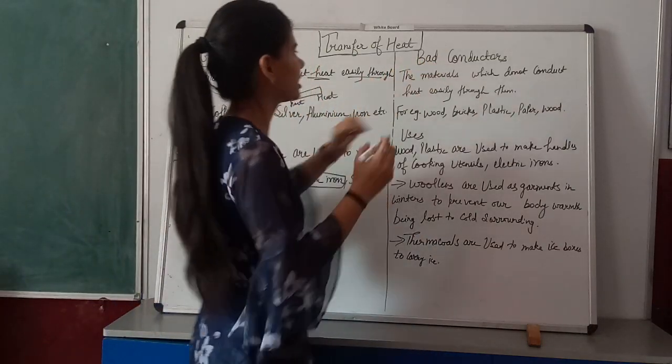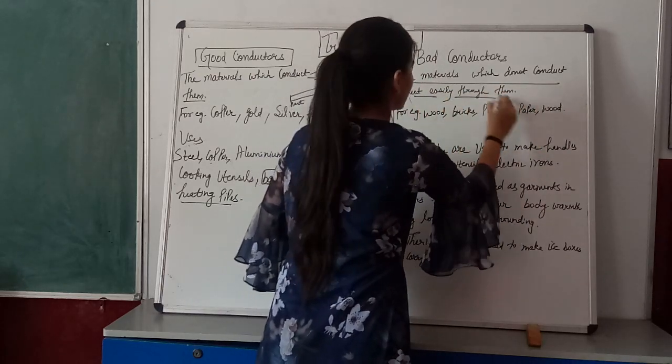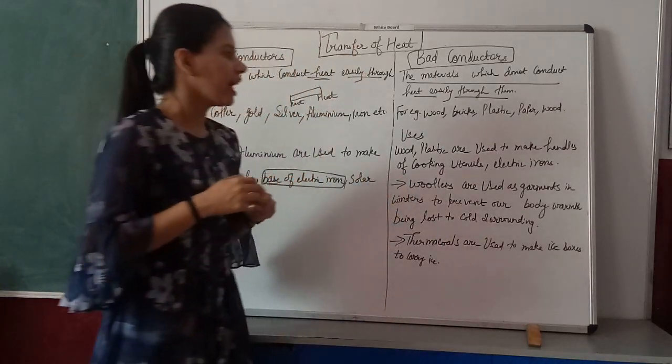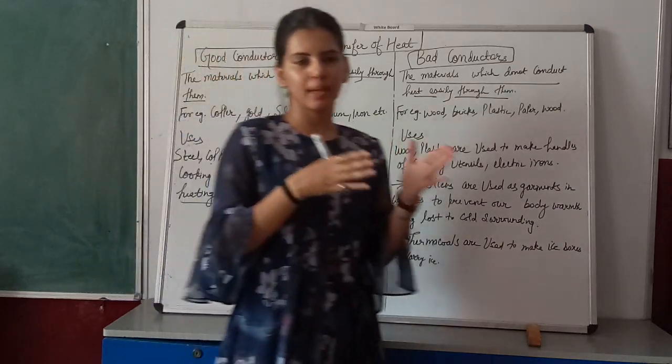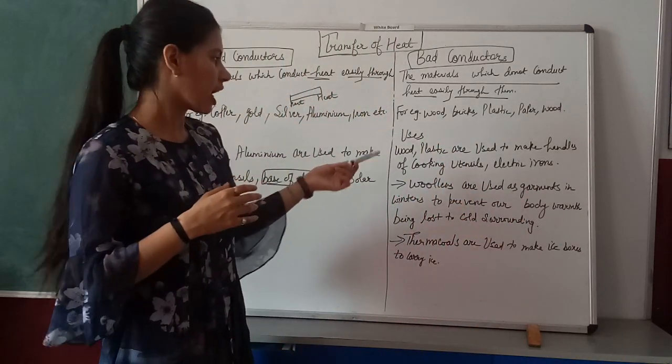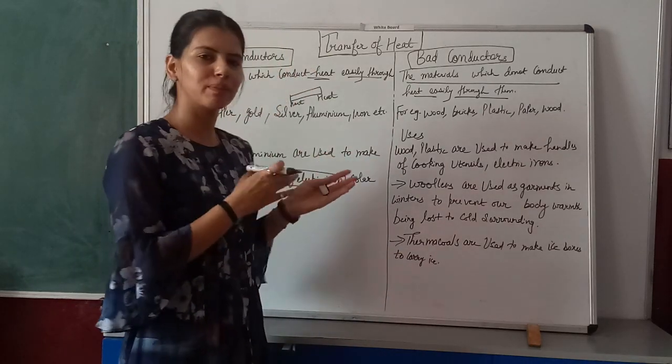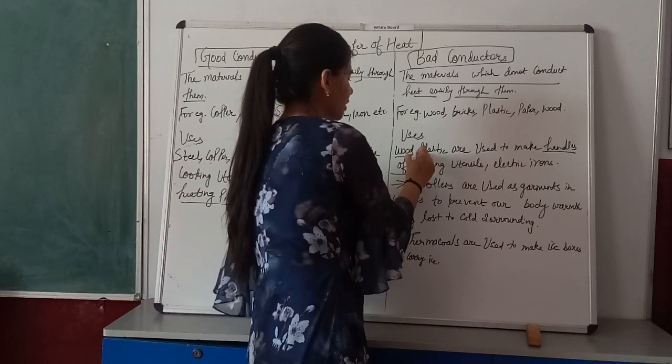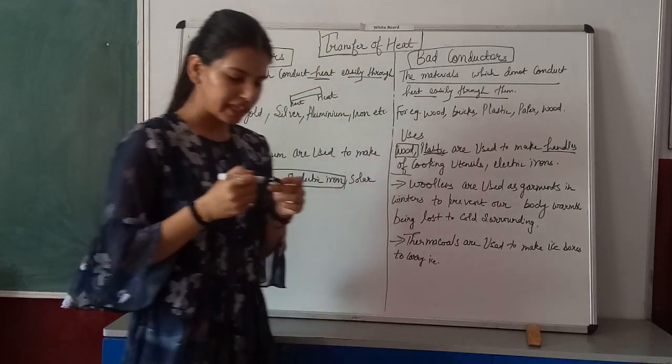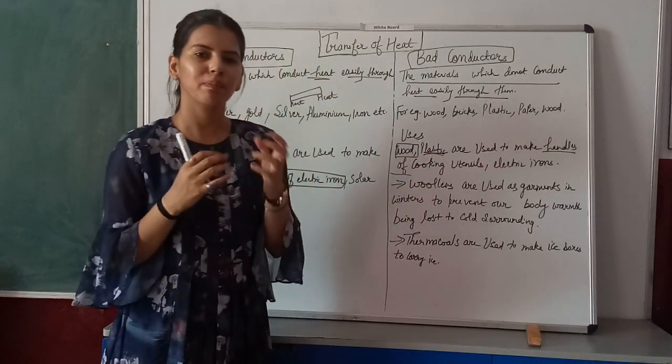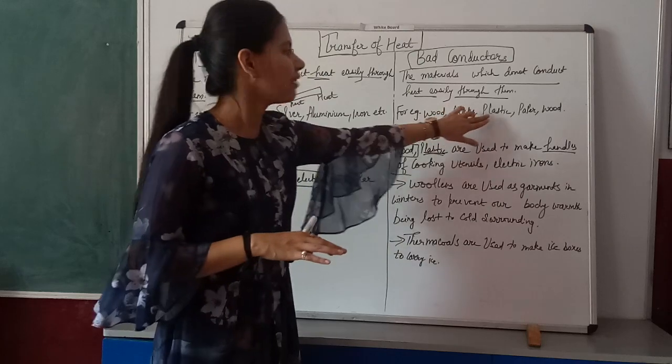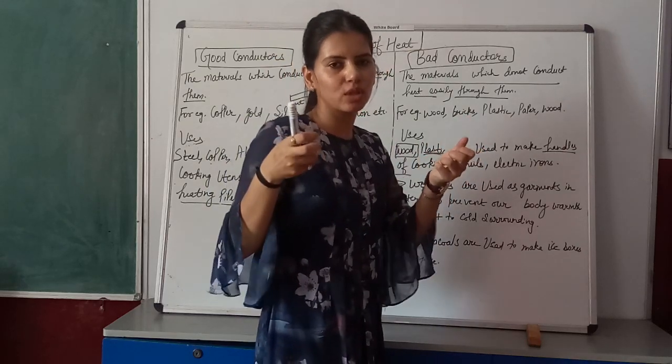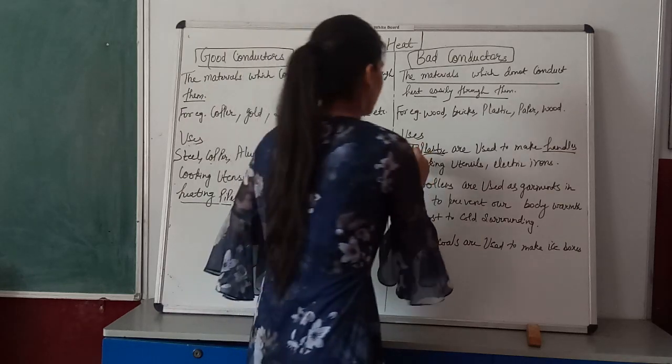Now, there are some materials through which heat cannot easily pass. These are called bad conductors. For example, wood, bricks, and plastic are bad conductors. They don't allow heat to pass through them easily. What are their uses? Handles of cooking utensils are made of bad conductors. While the utensils are made of aluminum or steel, the handles are made of wood or plastic because plastic is a bad conductor of heat, so when you hold the utensil by its handle, you don't feel the heat.